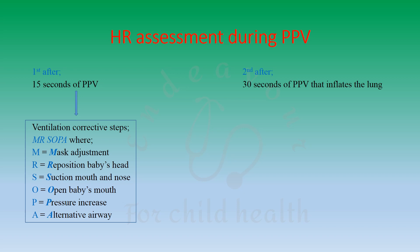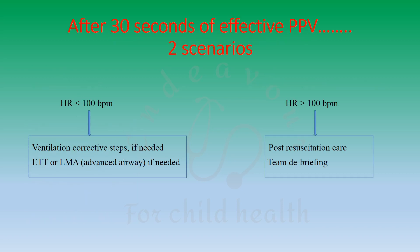The second assessment of heart rate is done after 30 seconds of effective PPV — that is, PPV which inflates the lungs. If the heart rate is still less than 100 beats per minute, immediately look for ventilation corrective steps and place an endotracheal tube or laryngeal mask airway, both advanced airways, and administer PPV via the advanced airway rather than mask. If the heart rate has improved to 100 beats per minute, provide post-resuscitation care and debrief your team.